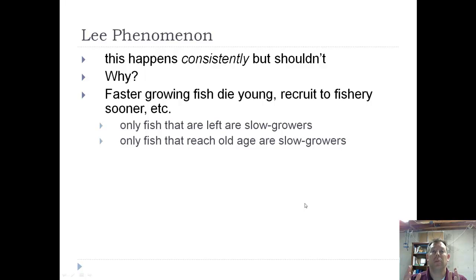And so, the only fish that make it to an old age are those that are slow growers. And so, it's no surprise that they were smaller at age one and smaller at age two, because they've been growing slower for their whole life. And that's the Lee phenomenon. Now, you don't always find this, but you often do, and so it's something to watch out for.